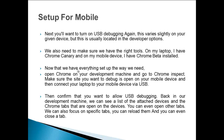Now that we have everything set up, open Chrome on your development machine and go to chrome://inspect. Make sure the site you want to debug is open on your mobile device, then connect your laptop to your mobile device by USB. Confirm that you want to allow USB debugging.